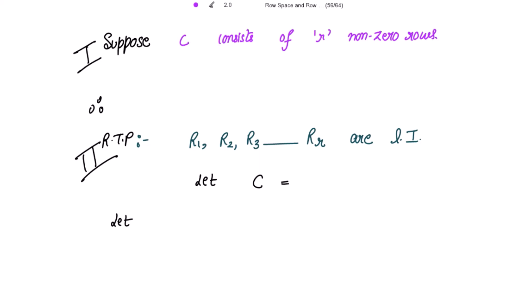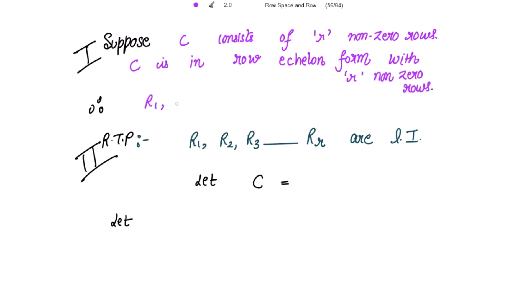Since C is in row echelon form with R non-zero rows, the first R rows of C — call them R1, R2, R3, up to RR — span the row space of C. To prove that the row rank of C equals R, we need to show these R rows form a basis for the row space of C.